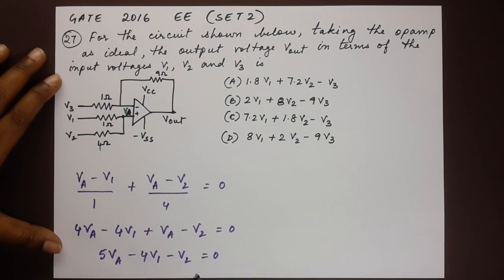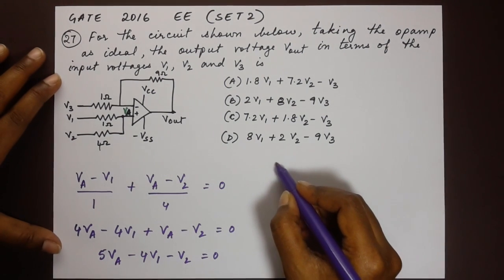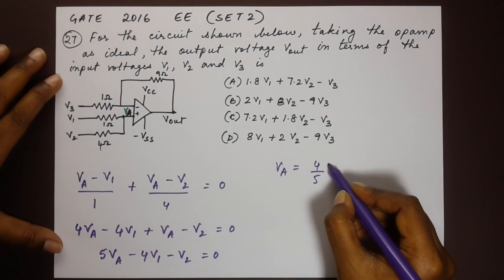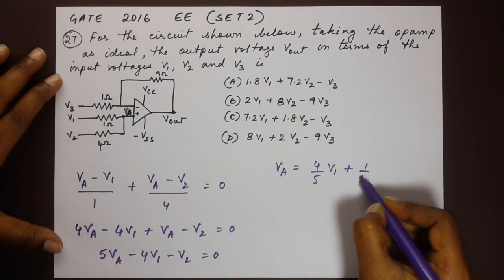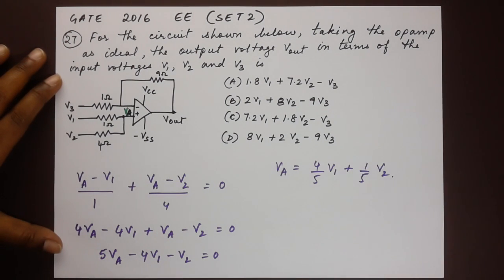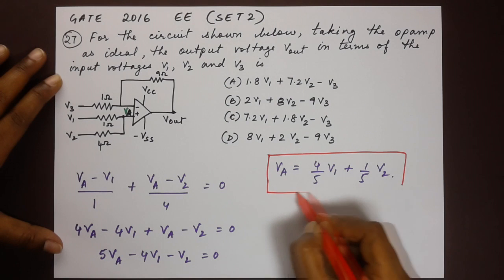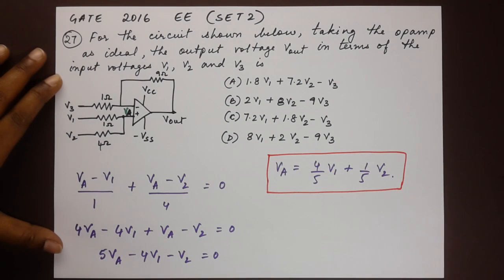Let's write Va in terms of everything else. From here we have Va is equal to 4 by 5 V1 plus 1 by 5 V2. Let's keep this equation in mind. We are going to use this for the next part of the solution.